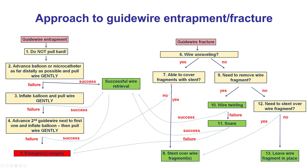If this does not work, then the balloon or microcatheter can be advanced even further, and the balloon can be inflated to free the wire. If this doesn't work, a second wire can be advanced next to the first wire, and a balloon inflated to try to free the wire from the surrounding tissue. If, despite all these efforts, the wire remains, then emergency surgery might be required.